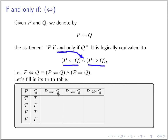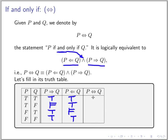Let's fill out the truth table. P implies Q: true/true gives true; true/false gives false; the other two are vacuously true. Q implies P: true/true is true; true/false (Q false) is true; false/true (Q true, P false) is false; false/false is true. AND-ing them together gives true, false, false, true. So P if and only if Q is true only when P and Q have the same truth values, which makes sense — they're equivalent when they match.